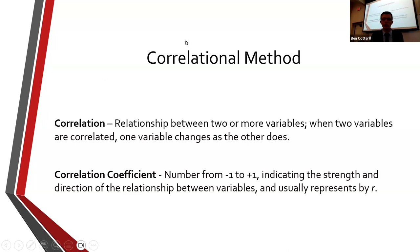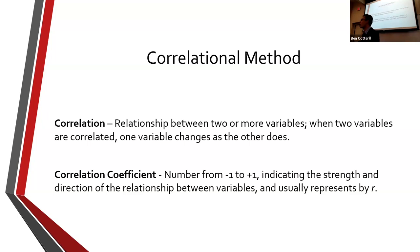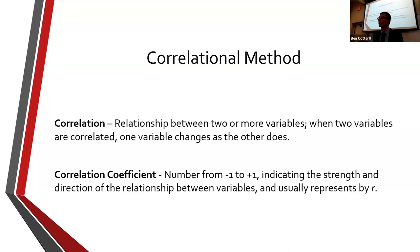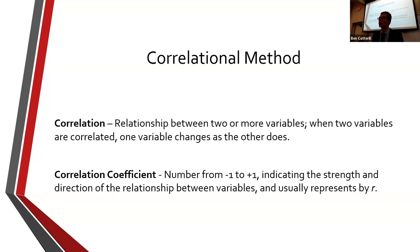This is demonstrated via a number called the correlation coefficient, also sometimes called small r in italics. It's a number from negative one to plus one. If it's a negative number, it's a negative correlation — as one goes up, the other goes down. If it's a positive number, it's a positive correlation — as one goes up, the other goes up. If it's zero, there's zero relationship and one has no impact on the other.